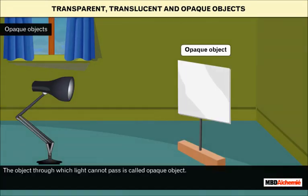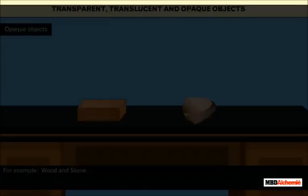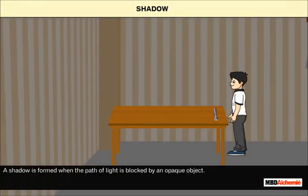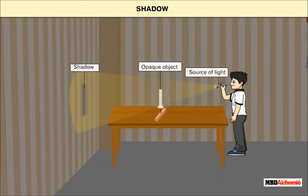The object through which light cannot pass is called an opaque object. It cannot be seen through an opaque object. For example, wood and stone. A shadow is formed when the path of light is blocked by an opaque object.